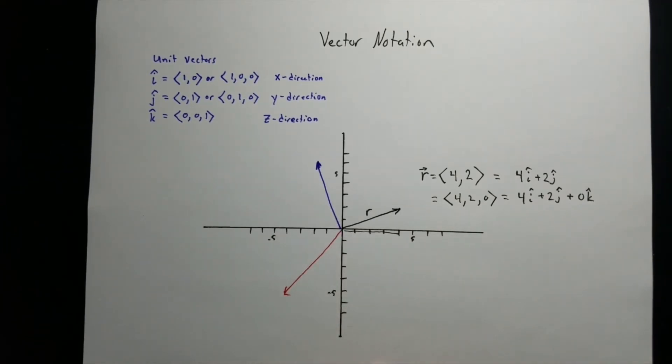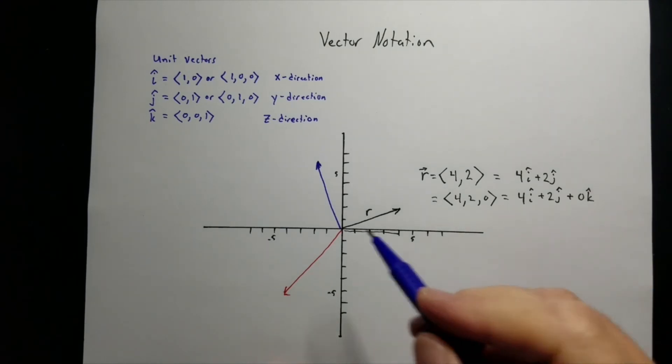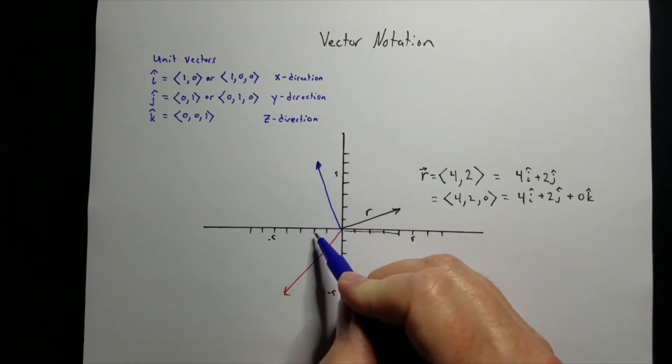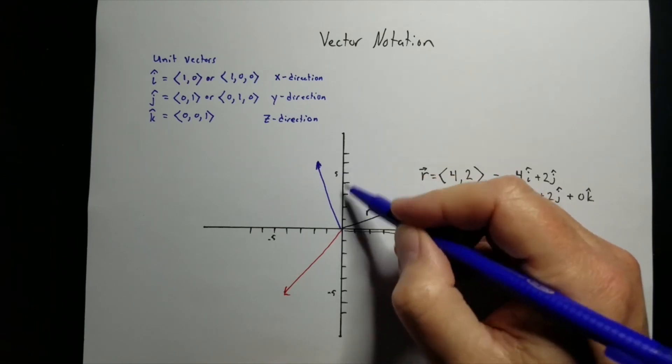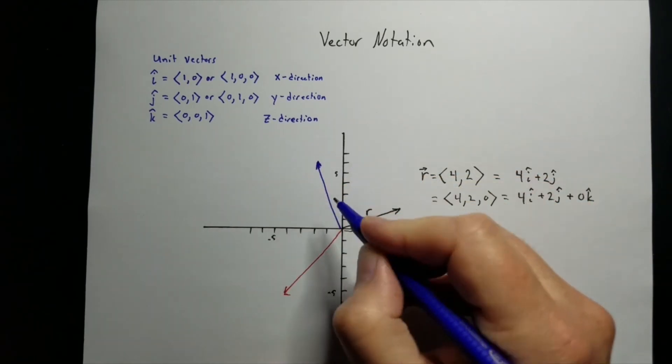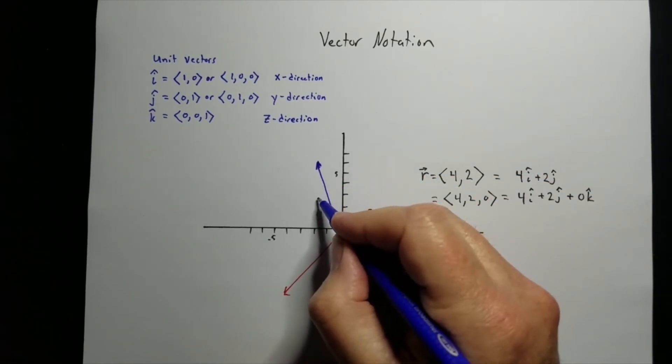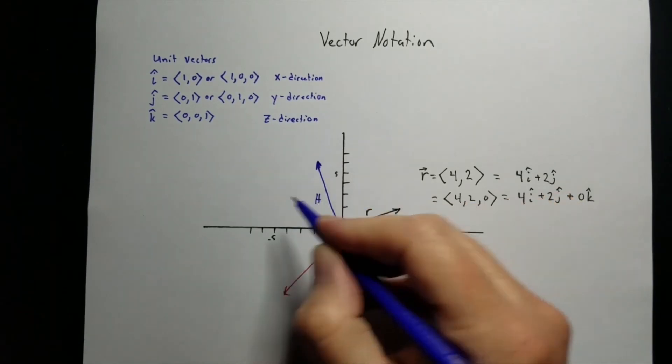Let's look at the blue one. So again, the x component's 2. The y component looks like 6. So let's call this one h.